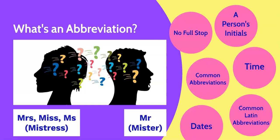An abbreviation is a shortened word or phrase, for example, Mrs, Miss and Ms. These are abbreviations of the word Mistress. It was only over time that Mrs came to refer to a married woman, Miss an unmarried woman, and Ms to both.